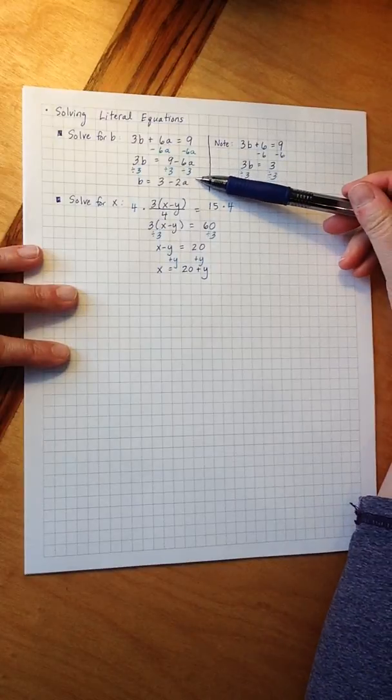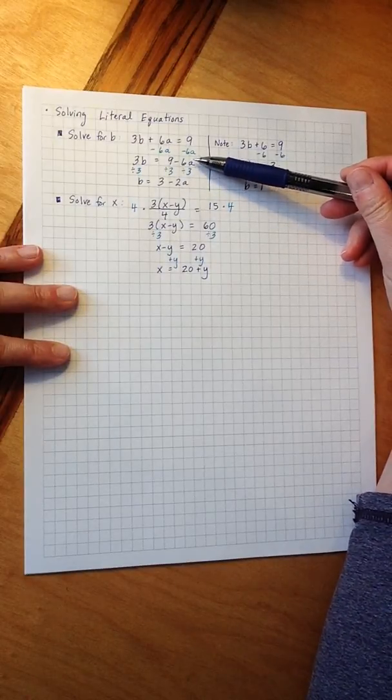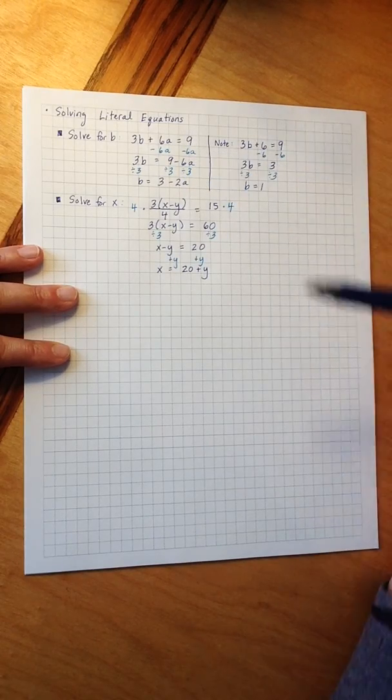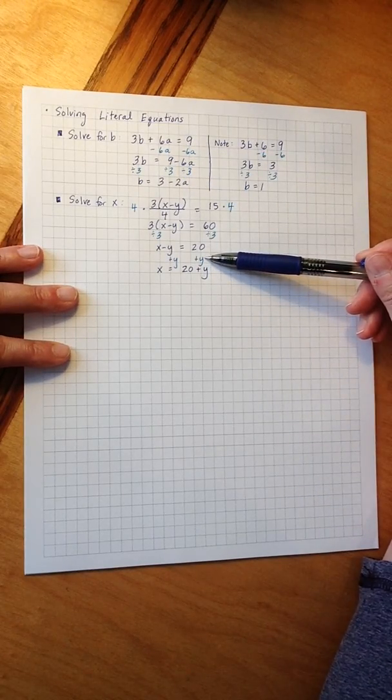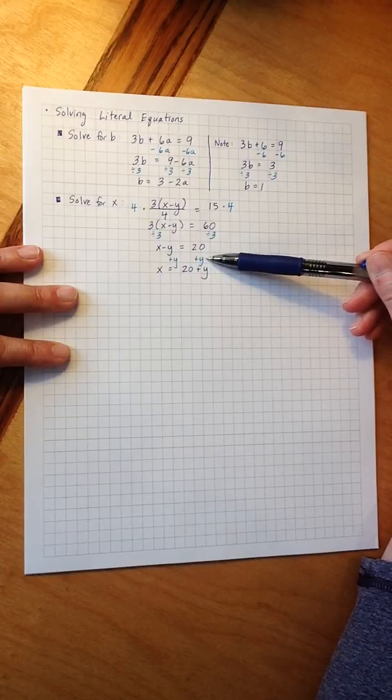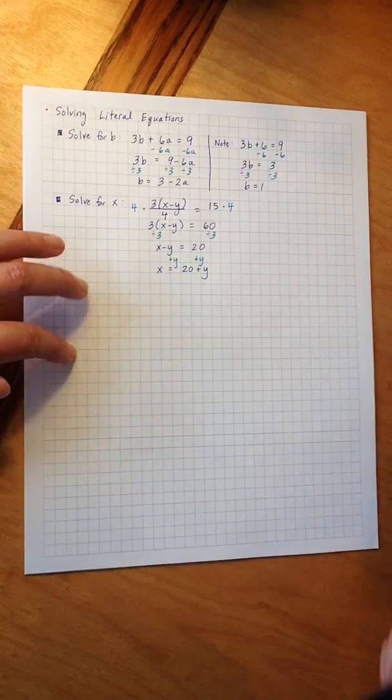And just like in our first example, where I don't know what the a is or negative 6a is, and so I can't combine and I write it as 9 minus 6a, that is also true here. 20 and y are not like terms. I don't know what the y is, so I leave it as 20 plus y.